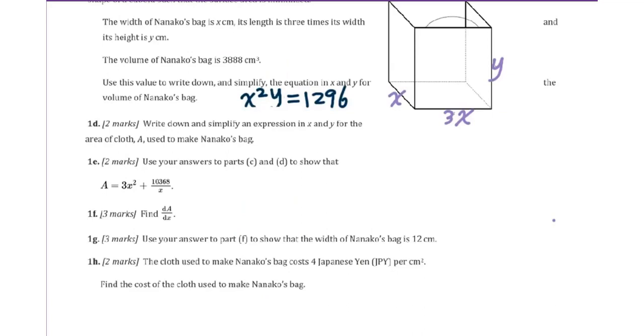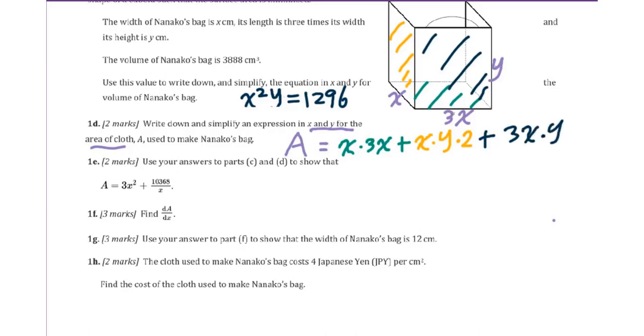Now go to 1d. Write down and simplify an expression in x and y for the area of cloth A used to make this girl's bag. So we have area equals the bottom part, we have x times 3x. For the side, you will get x times y then times 2. Then we have front. For the front area, it will be 3x times y.